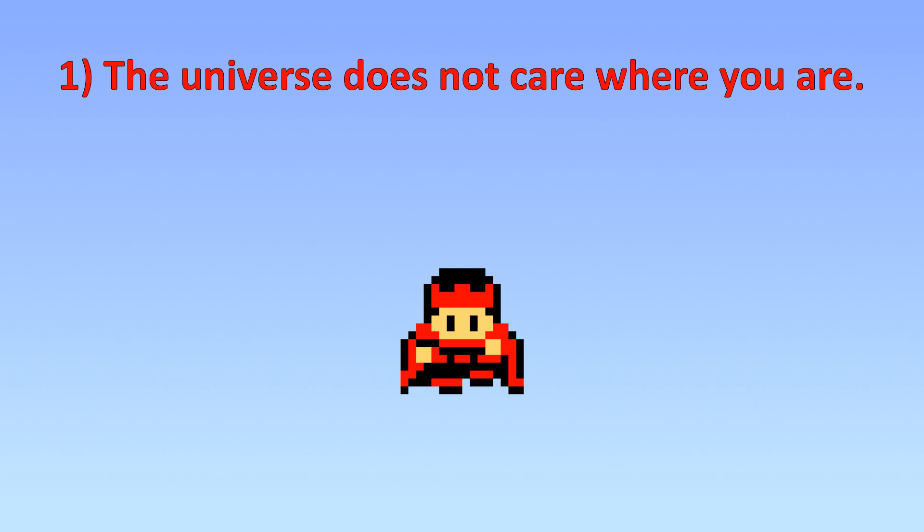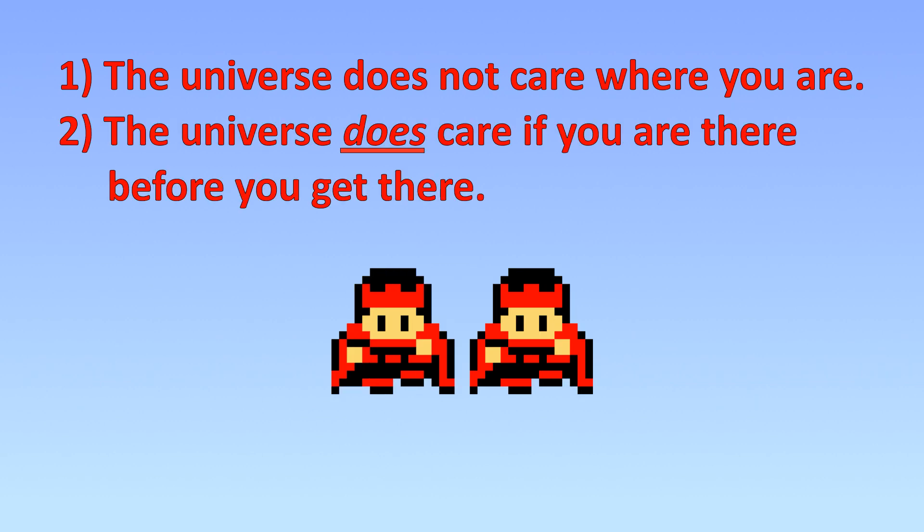We can look at two major rules that, if broken, our universe would simply fall apart. First, the universe doesn't care where you are. But secondly, the universe does care if you're there before you get there. That relates to a few rules about time.